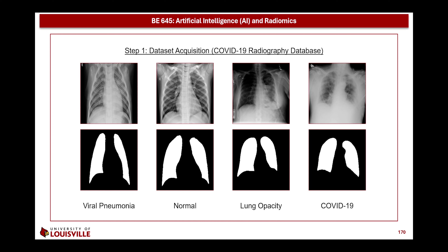Viral pneumonia is an infection in the lungs caused by a virus, which can lead to inflammation and fluid buildup inside the air sacs, making it harder to breathe. Symptoms often include cough, fever, and shortness of breath. Viral pneumonia can be seen on a chest X-ray as patchy areas of opacity. Lung opacity refers to any area of a chest X-ray that looks denser than the surrounding tissue, and can be caused by various conditions like infections — bacterial or otherwise — tumors, and fluid buildup.